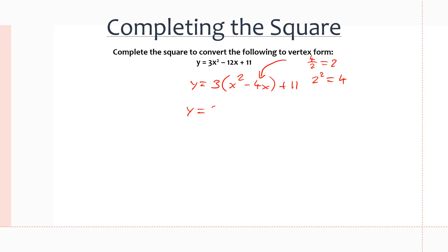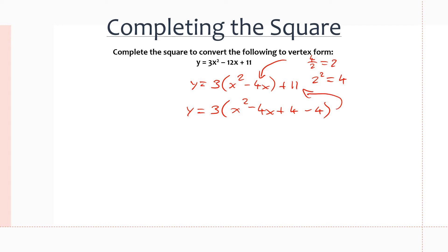So if we want a perfect square trinomial we do x squared minus 4x plus 4, and now this can be factored into a binomial to the power of 2. But we can't just add 4 to the equation because it will change the equation, so to keep the equation the same we subtract the 4 as well. Now if we do positive 4 minus 4 we get 0, so we haven't changed the equation. We still have this plus 11 at the end — we just added a 4 and subtracted a 4.